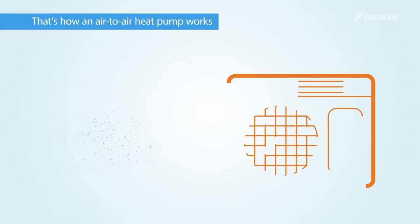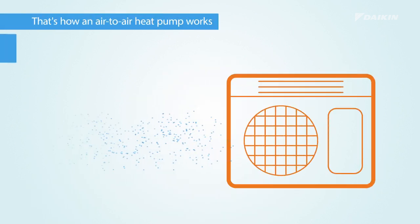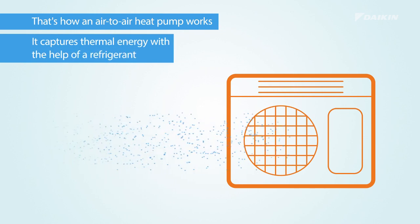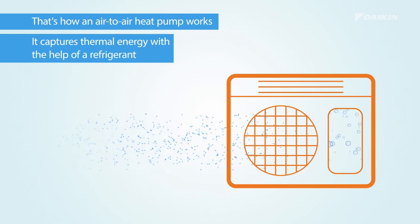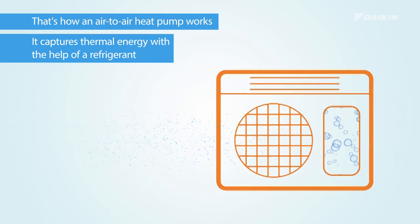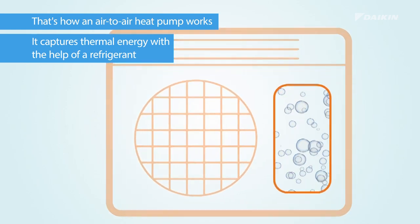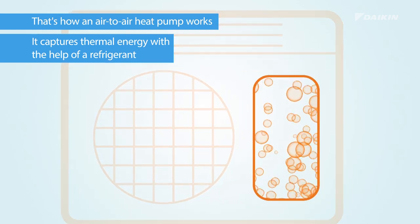And that's exactly how an air-to-air heat pump works. It captures thermal energy from the outside air with the help of a refrigerant. The movement of its particles is then speeded up in the confined space of a compressor.